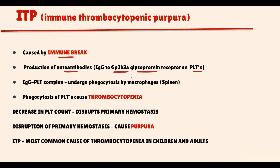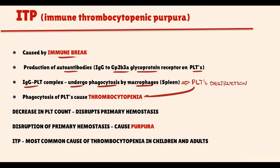As a result, immunoglobulin G antibodies bind to platelets and subsequently they undergo phagocytosis by macrophages, resulting in platelet destruction and thereby thrombocytopenia. Thrombocytopenia affects primary hemostasis, and disruption of primary hemostasis manifests with purpura. Importantly, immune thrombocytopenic purpura is the most common cause of thrombocytopenia in children and adults.